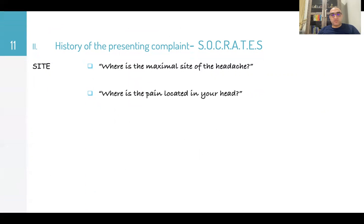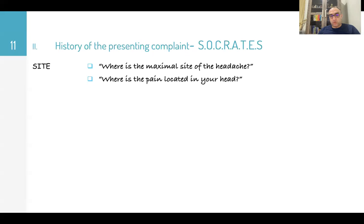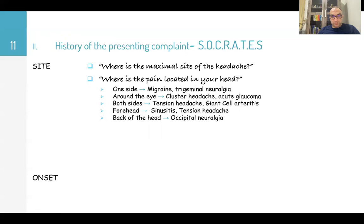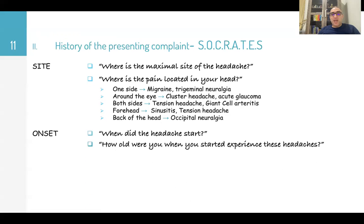For site: 'Where is the maximal site of the headache? Where is the pain located?' One side of the head suggests migraine or trigeminal neuralgia. Around the eye suggests cluster headache or acute angle-closure glaucoma. Both sides suggests tension headache or giant cell arteritis. On the forehead suggests sinusitis or tension headache. Back of the head suggests occipital neuralgia. This covers the site component of SOCRATES.